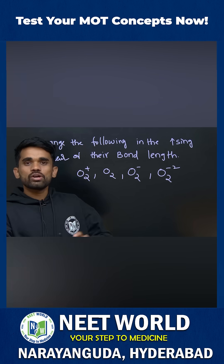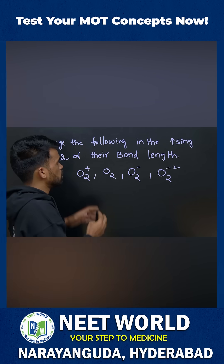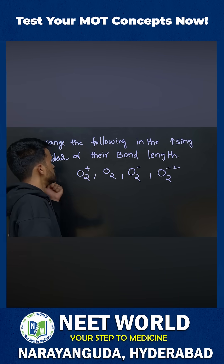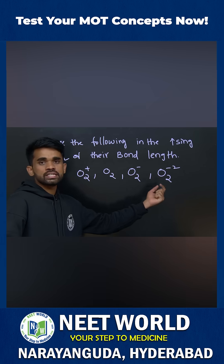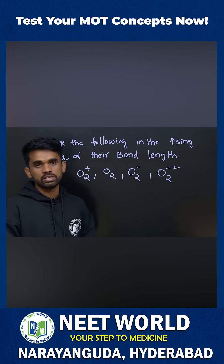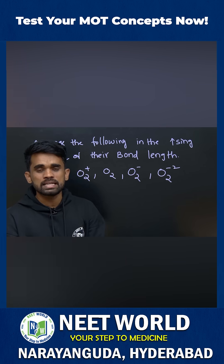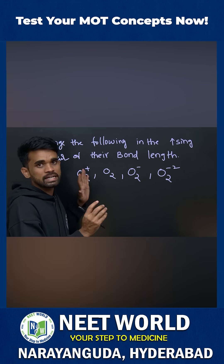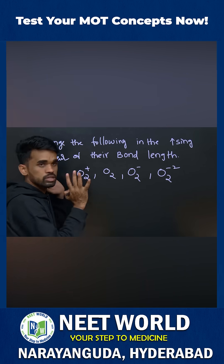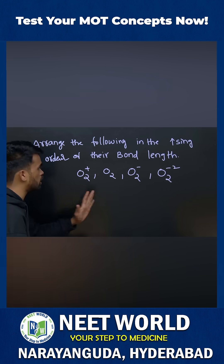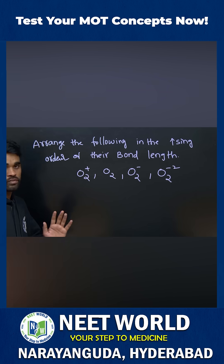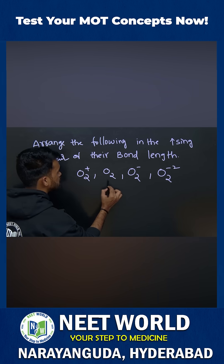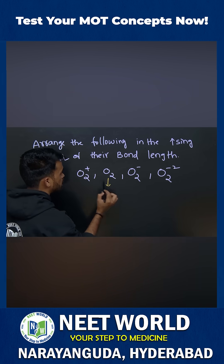Dear students, we have a question asking about arranging the given species in increasing order of their bond length. I will explain this with a simple trick — just follow the class. This question is from molecular orbital theory, from the chapter on chemical bonding.